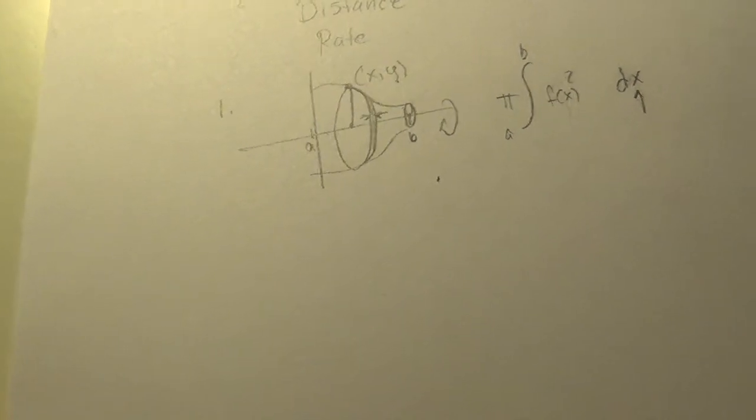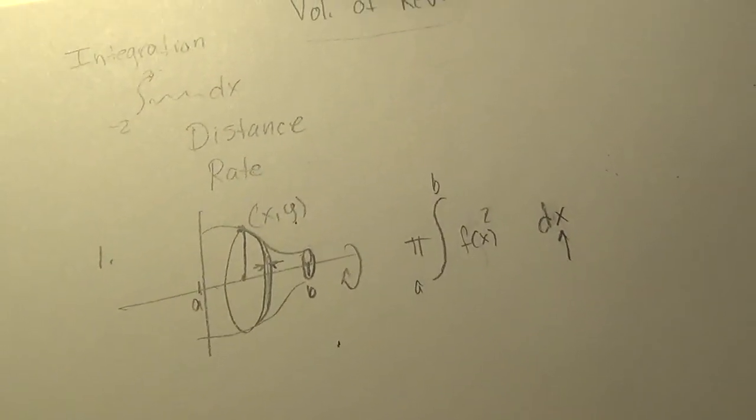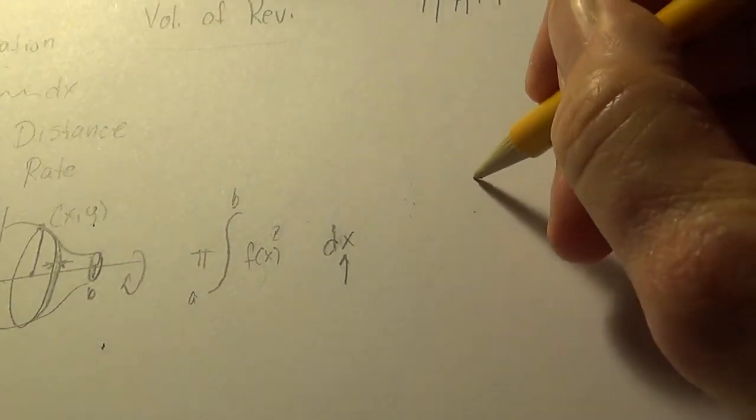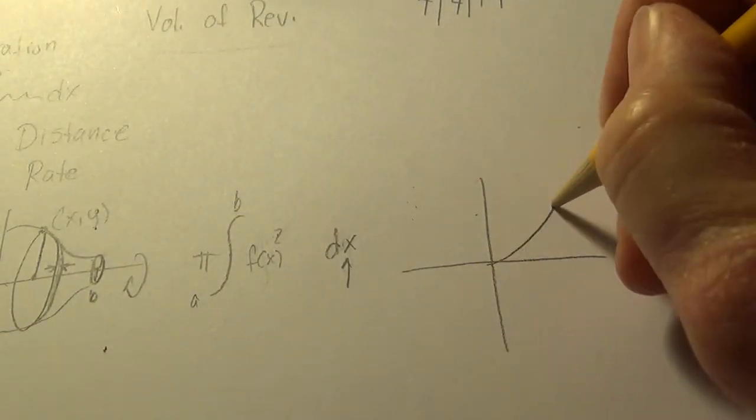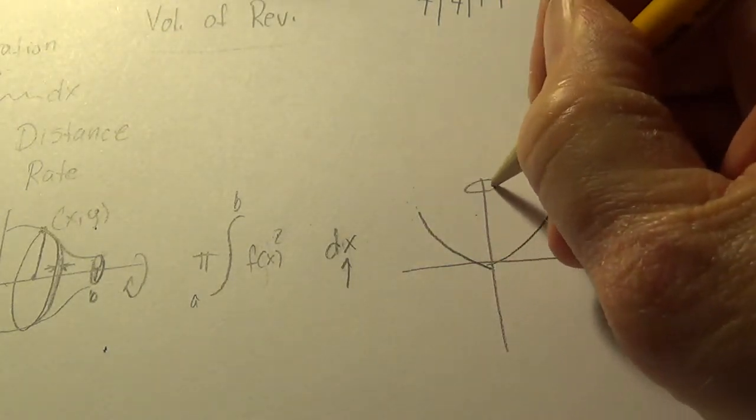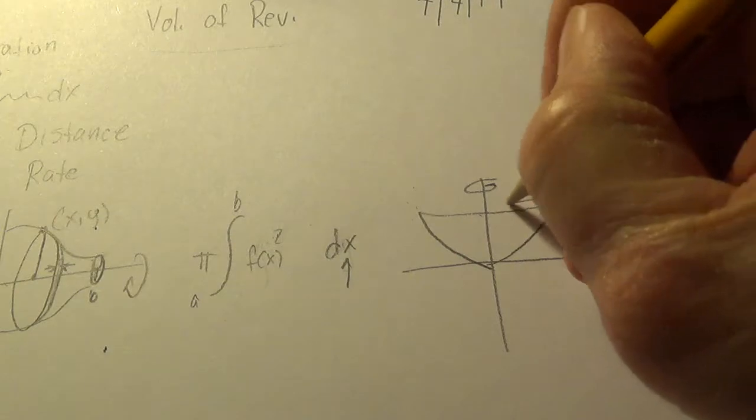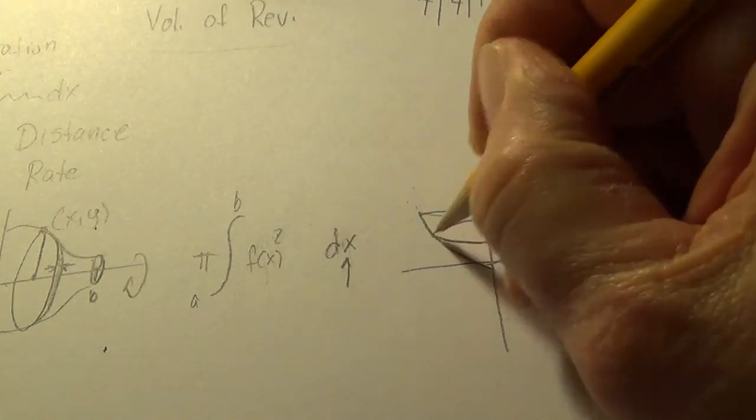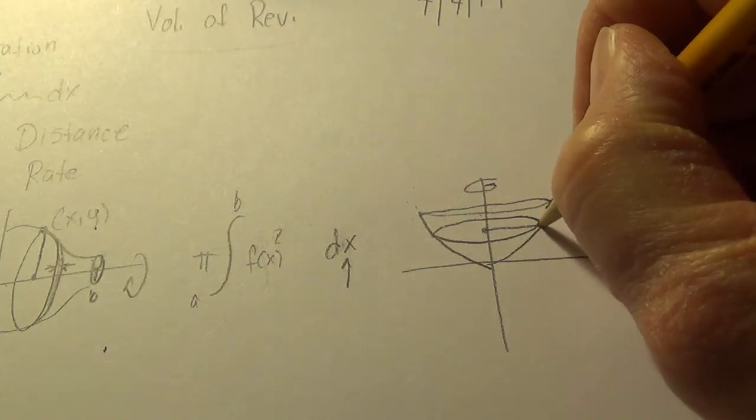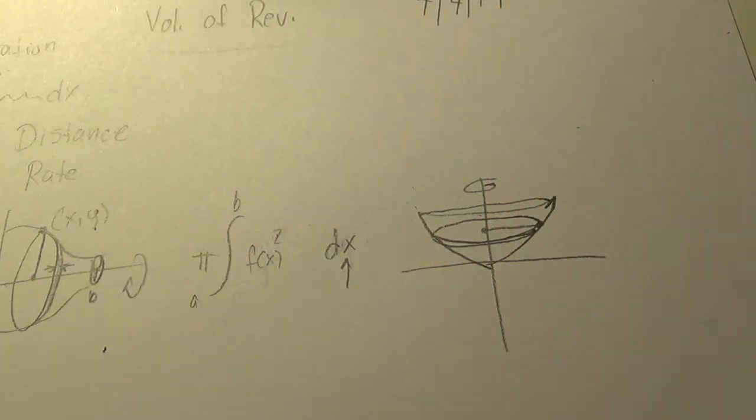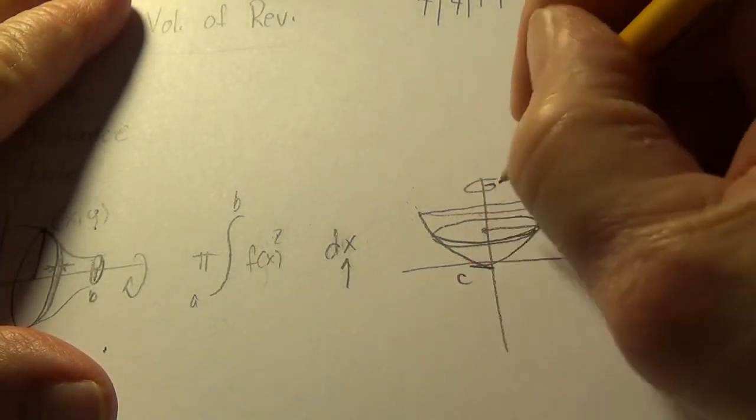So that's some of what we saw in theory, and then we spun it around the other way, and say we had this function, and we're going to go around the y-axis, and this time our disks go this way, the radius, and they have a thickness as well, so we're going to stack these up from c to d.